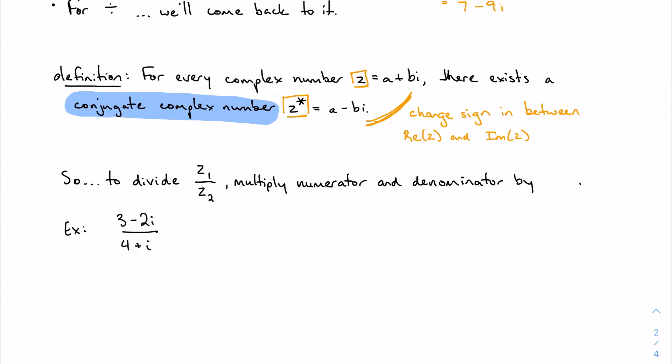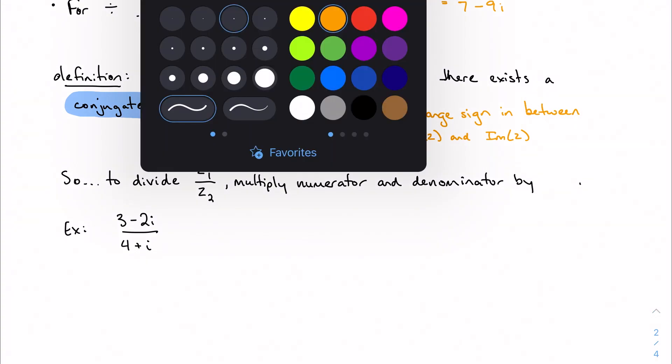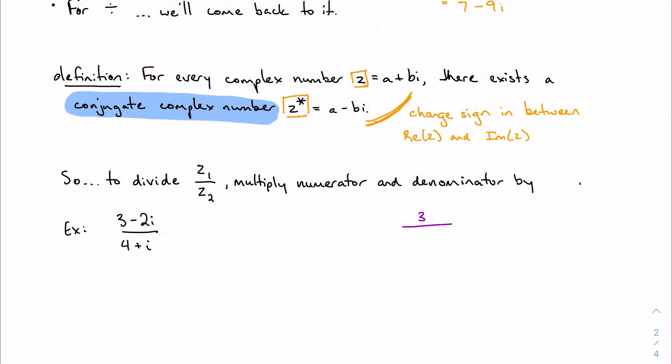To divide z1 by z2, think back to when we would rationalize something. If I looked at an example, to rationalize I would multiply by the conjugate of my rational expression in the denominator to eliminate the radical expression. It stands to reason I'm going to do the exact same thing: multiply the numerator and denominator by the conjugate of the denominator. We want to think about it almost like rationalizing, again not a new process, just a fancy new name.